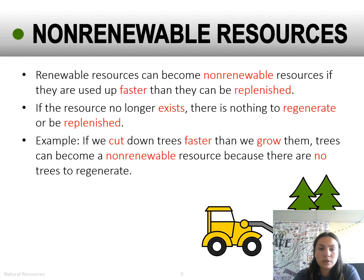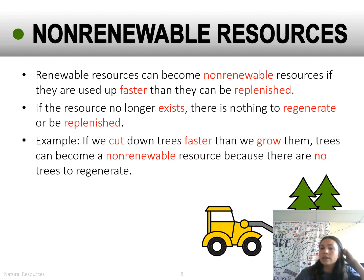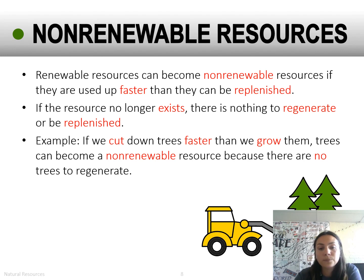Renewable resources can become non-renewable resources if they are used up faster than they can be replenished or replaced. If the resource no longer exists, there's nothing to regenerate or be replenished. For example, if we cut down trees faster than we grow them, trees can become a non-renewable resource because there are no more trees to regenerate.